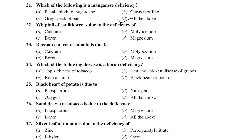Whiptail of cauliflower is a very important question. The answer is molybdenum deficiency. This question has appeared repeatedly over many years: whiptail of cauliflower is caused by molybdenum deficiency.